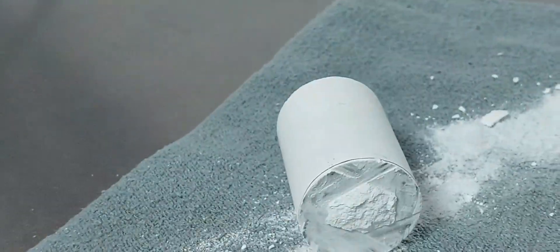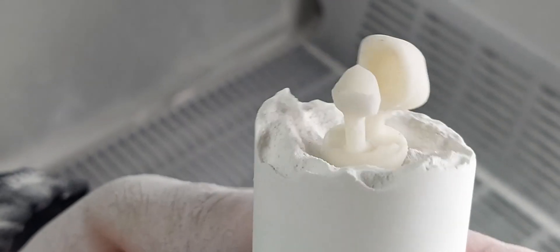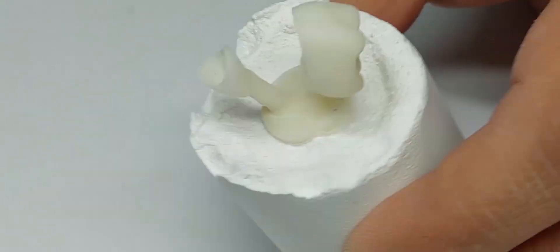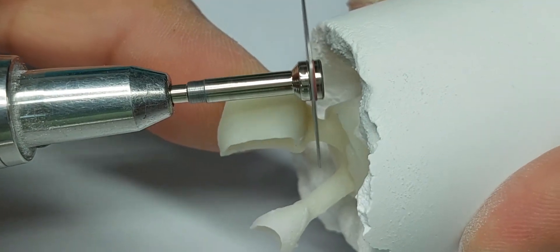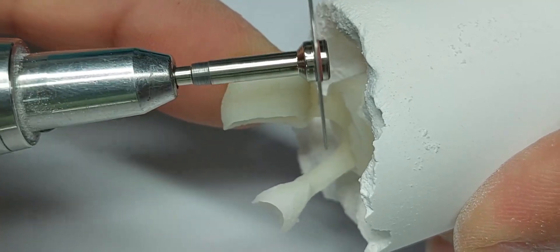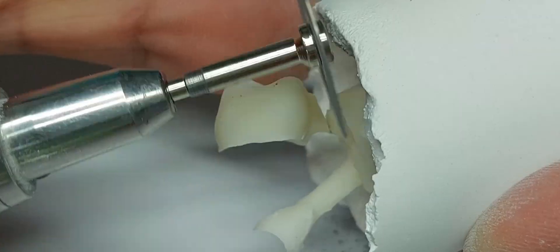Insert your model into the sandblaster and blast using 50 micron aluminum oxide grit at a pressure of 4.25 bar. You will then remove your case and examine it carefully. See how nice it is? Free of any reaction layer. Trim it using a flexible diamond disc so that you do not risk fracturing any part of your restorations.